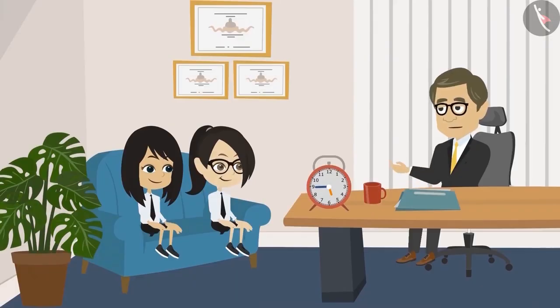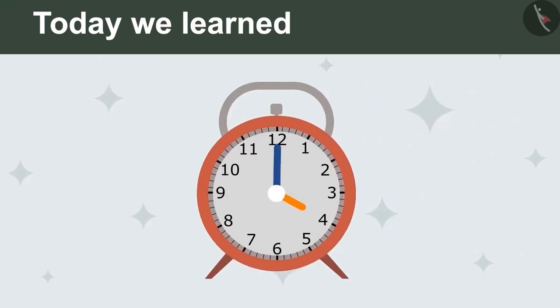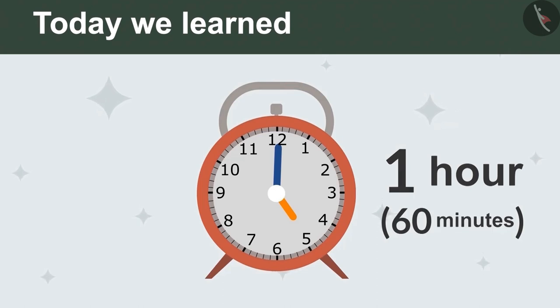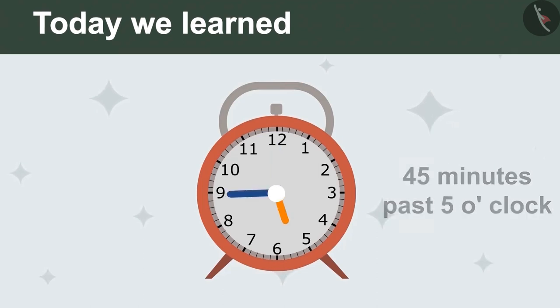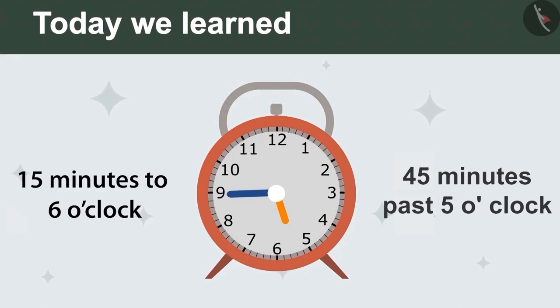Tell me, what did you understand? That, sir. When the minute hand completes one round, then it makes one hour. This means an hour consists of 60 minutes. And it can be told taking more minutes to the time like 45 minutes past 5 o'clock or the remaining minutes like 15 minutes left to 6 o'clock. Time can be told in both the ways.